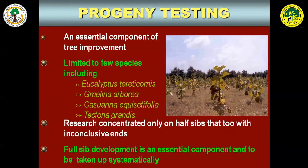Majority of programs have been working on half-sibs, where only one parent is known. In a sector like forestry with a gestation period of 10–20 years, only two to three breeding cycles are possible in a scientist's lifetime. Now it is time to move further and work on full-sibs, meaning artificial hybridization where both parents are known. Working on full-sibs allows us to gain heterosis — a very high degree of gain — which is possible through hybridization.